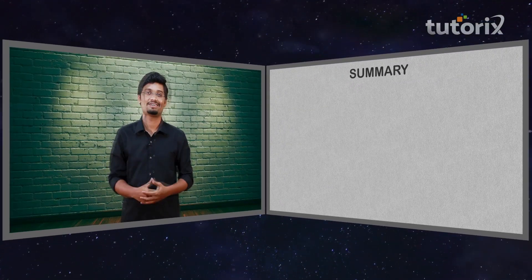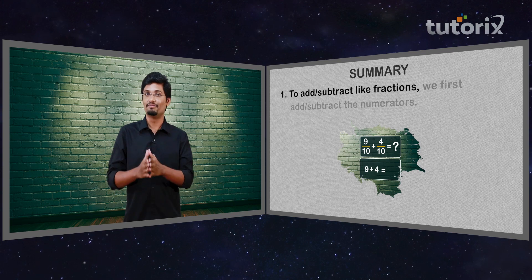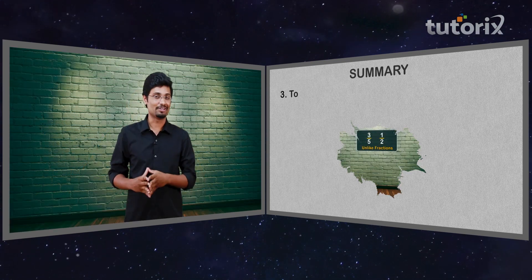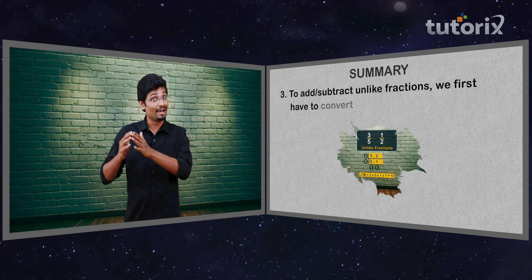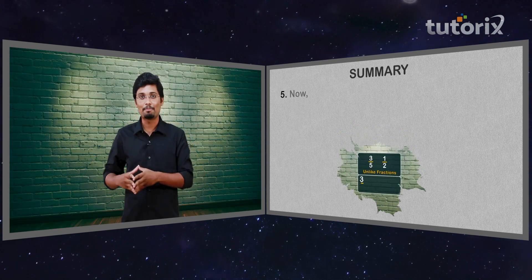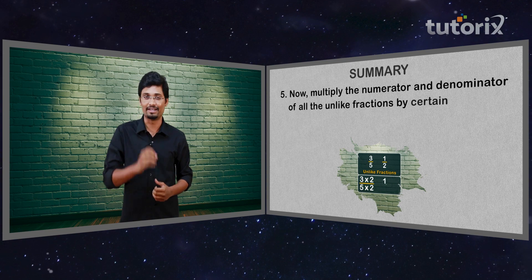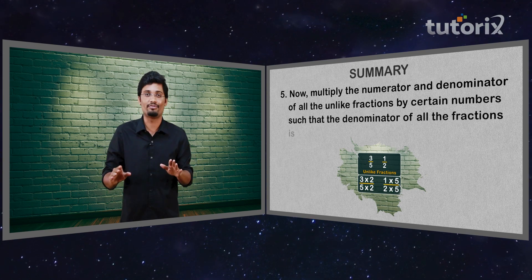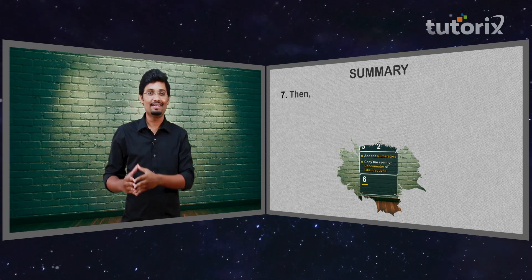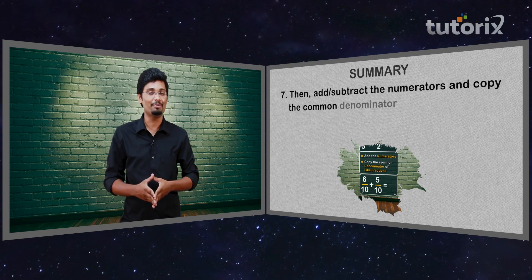Very smart! So guys, I hope you had a great time learning how to add and subtract like fractions and unlike fractions. Before we sign off, let us have a recap of what we have learnt. To add or subtract like fractions, we first add or subtract the numerators, then copy the denominator in the final result. To add or subtract unlike fractions, we first convert unlike fractions into like fractions by finding the LCM of the denominators, then multiply the numerator and denominator of all unlike fractions by certain numbers such that all denominators equal the LCM. After the multiplications, all fractions become like fractions — then add or subtract the numerators and copy the common denominator in the final result.